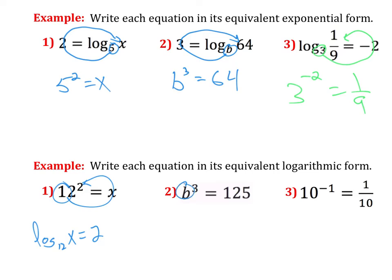Next step, my base is b. I'll swoop around the equal sign. So b, 125, then 3. Log base b of 125 equals 3.